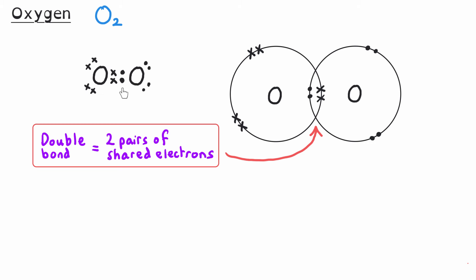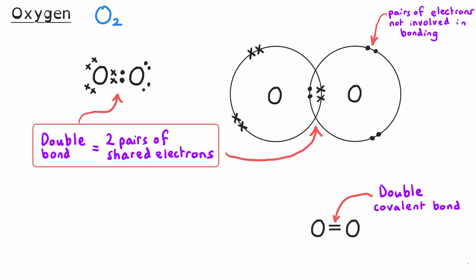In the dot and cross diagram without shells, we still show four electrons in the middle in two pairs representing the double covalent bond, plus four non-bonding electrons on each oxygen atom — giving each oxygen a full shell of eight. The displayed formula uses two lines between the two oxygen atoms to represent the double bond, and the ball and stick diagram similarly shows two sticks between the two oxygen atoms.